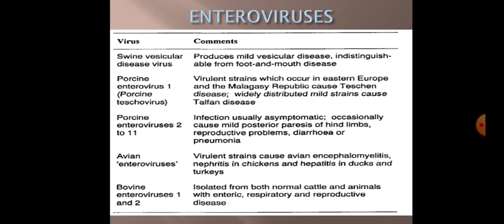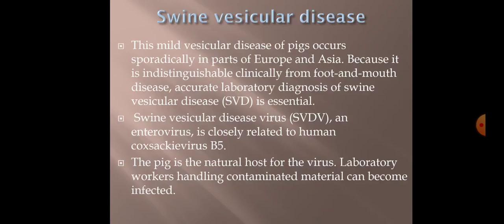Bovine enteroviruses 1 and 2 are isolated from both normal cattle and animals with enteric, respiratory, and reproductive diseases. Of all the enteroviruses, we will focus on swine vesicular disease as the most important. Swine vesicular disease is a mild vesicular disease of pigs occurring sporadically in parts of Europe and Asia. Because it is indistinguishable clinically from foot and mouth disease, accurate laboratory diagnosis of swine vesicular disease is essential.